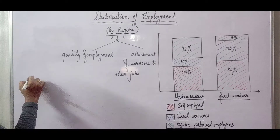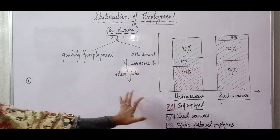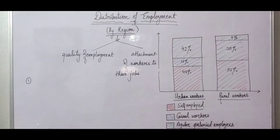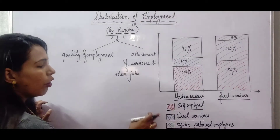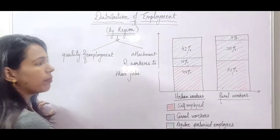Now let's proceed with data analysis. If you look at the bar graph which I have made, we will discuss it in detail. The most major portions shown are self-employed, casual workers, and regular salaried employed.